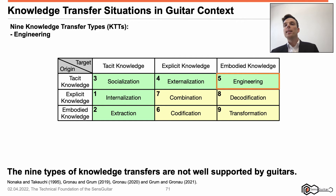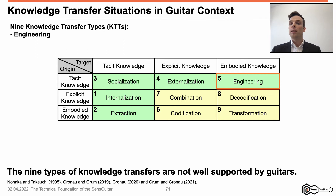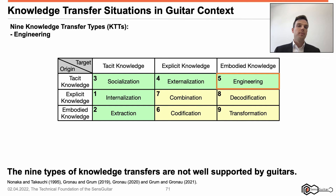Engineering: knowledge carrier-bound tacit knowledge is applied in a task to embody knowledge at a physical object. For instance, a person composes a musical piece. Here, tacit knowledge about the act of making music and being creative are applied to the sheet of music. Since traditional guitars do not support composing activities, engineering in a musical sense is not supported by guitars yet.